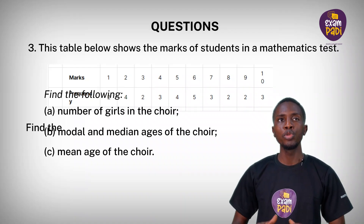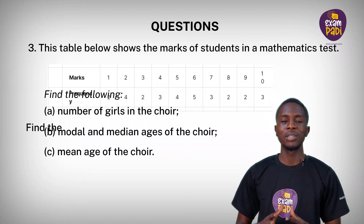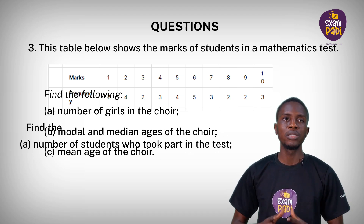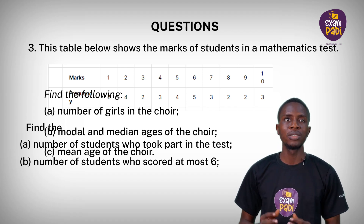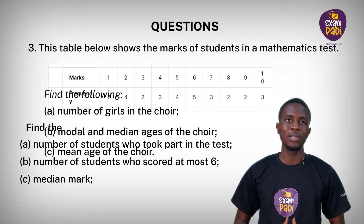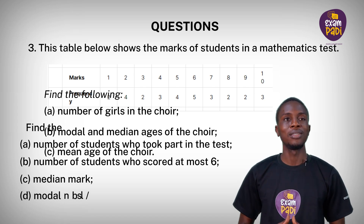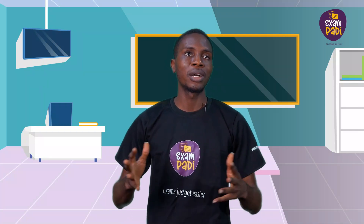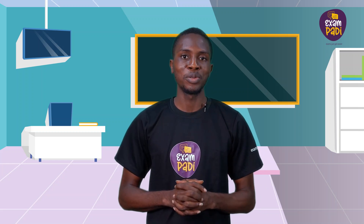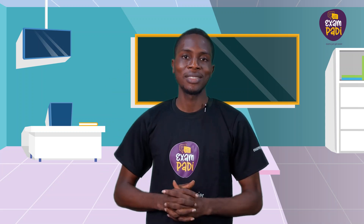Question 3: This table shows the marks of students in a mathematics test. Find: A. Number of students who took part in the test. B. Number of students who scored at most 6. C. Median mark. D. Modal mark. Thank you for learning about data presentation with me. I believe I've impacted you in this lesson. See you in our next video. Keep learning. Bye!